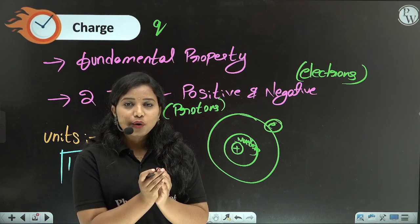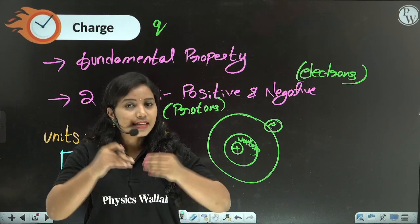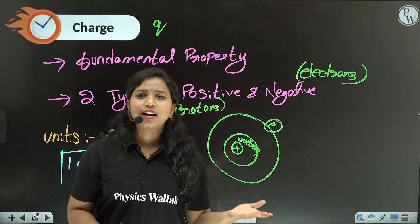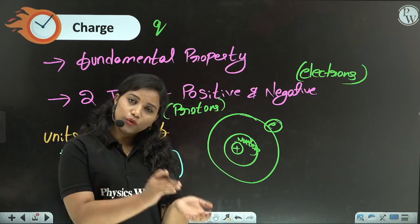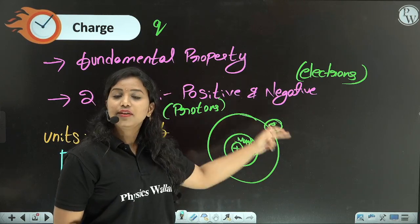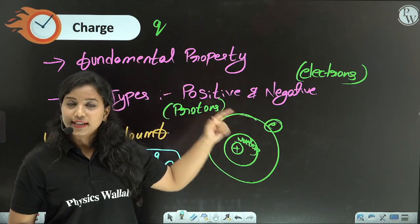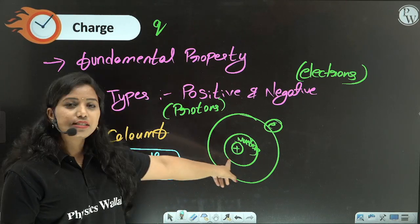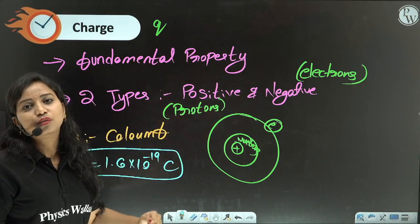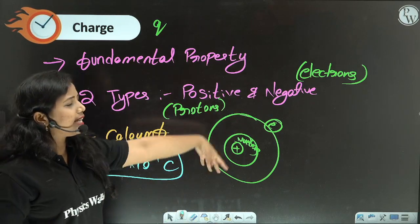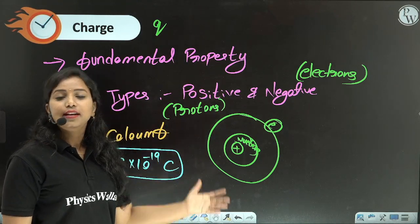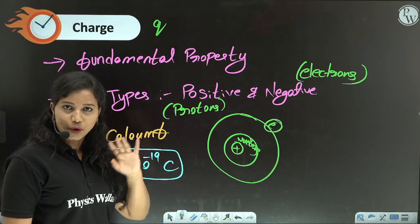Neutrons have no charge — they are in a completely neutral state, so neutrons have no charge at all. Neutrons and protons together are inside the nucleus, and electrons revolve in orbits outside the nucleus. More detailed information about orbits and how electrons revolve is covered in chemistry. But for electric current, these basic points are sufficient.